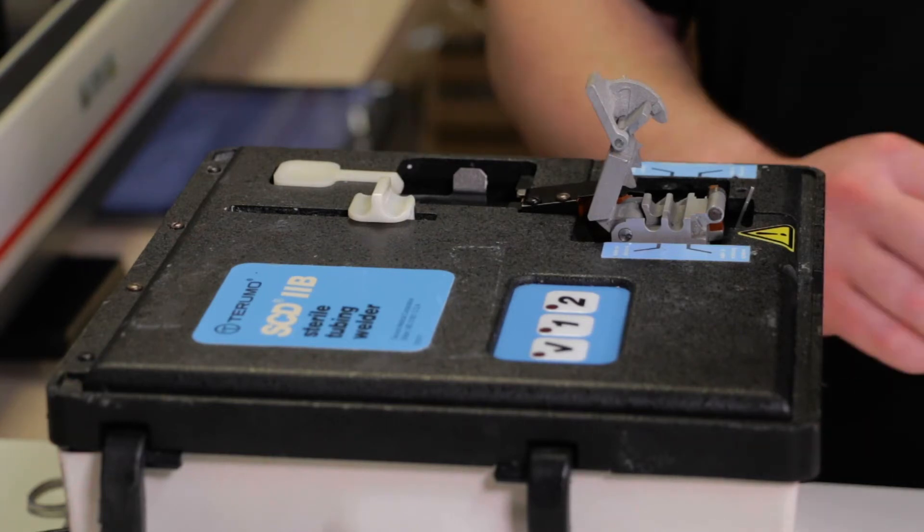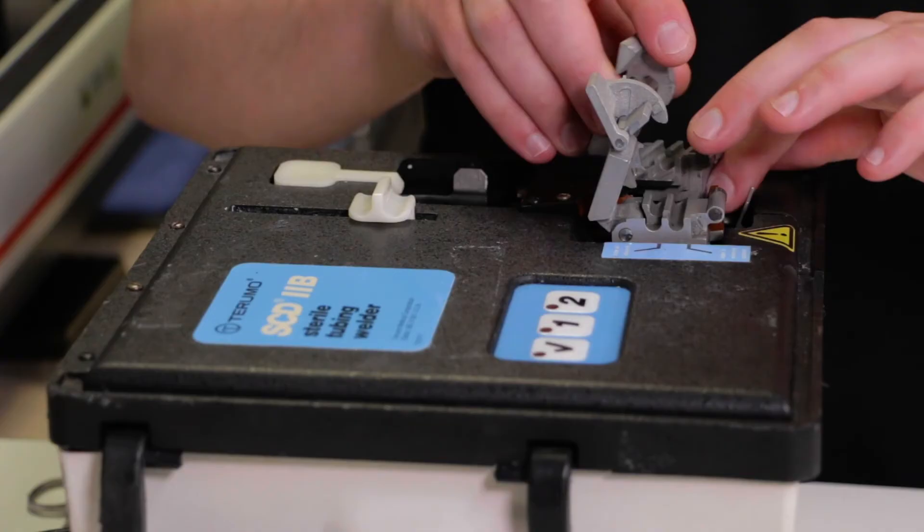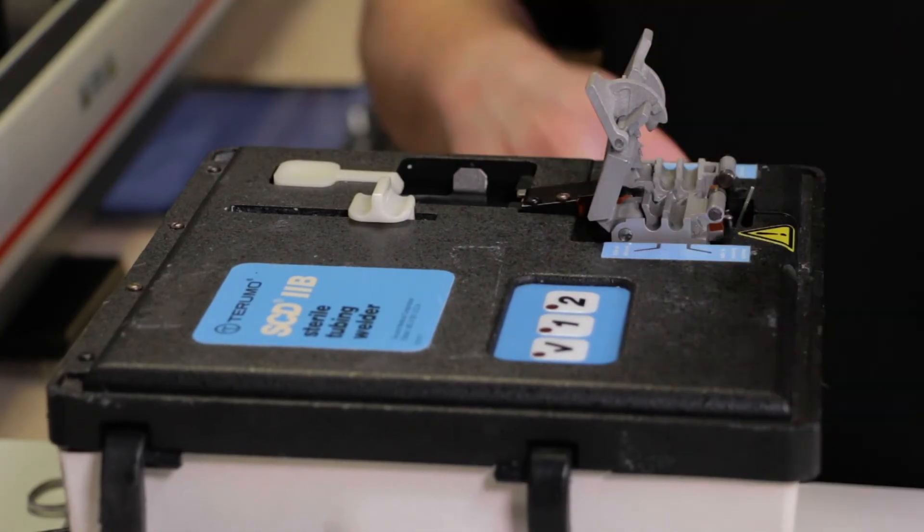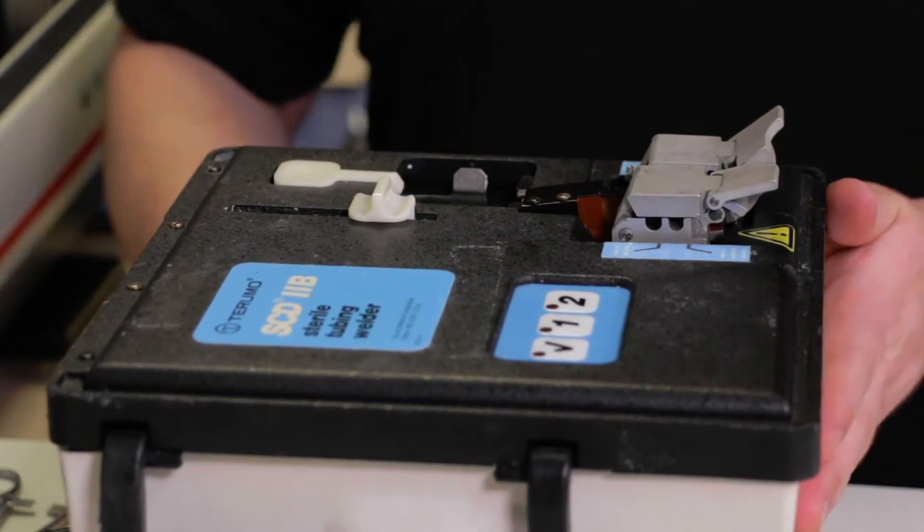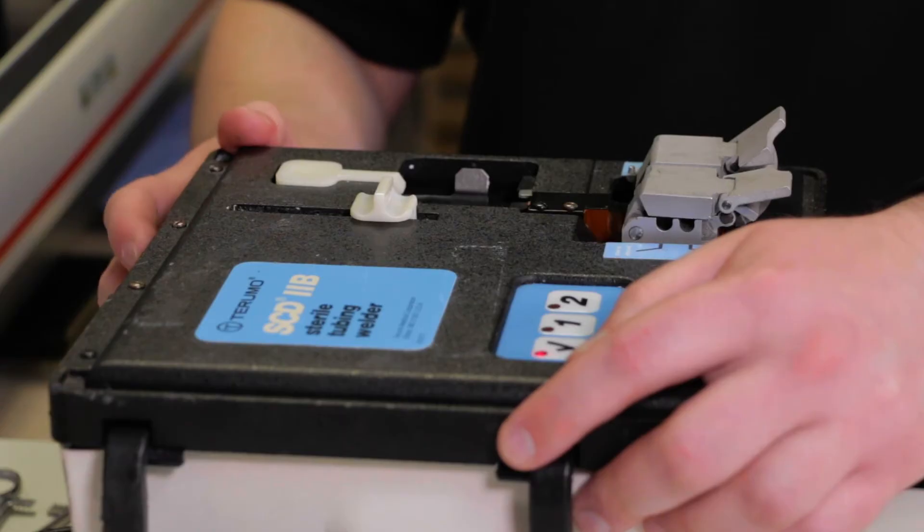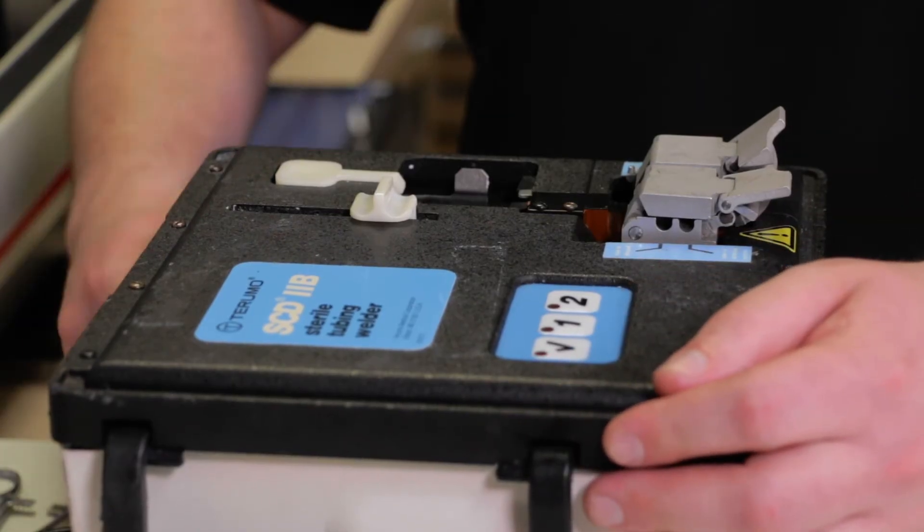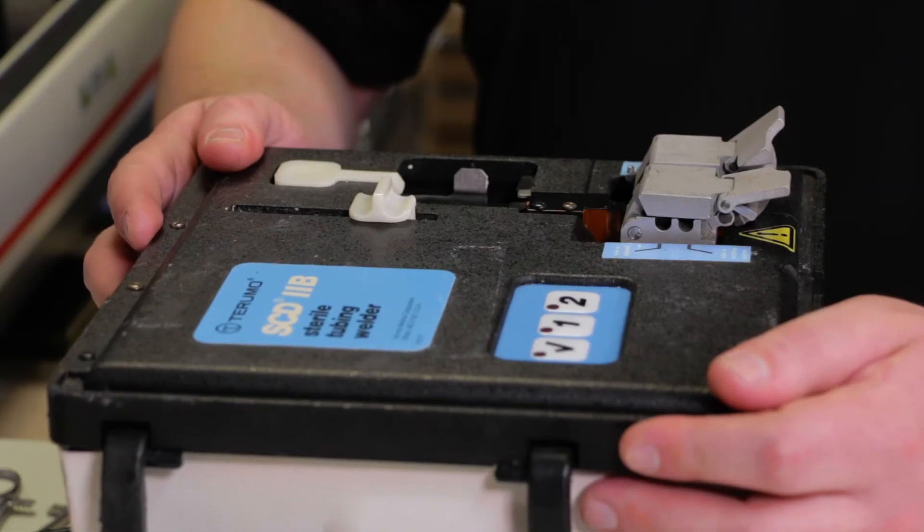Once that's done, simply replace the frame-mounted carrier, re-initialize and home the welder, and follow the realignment steps outlined earlier in this video.